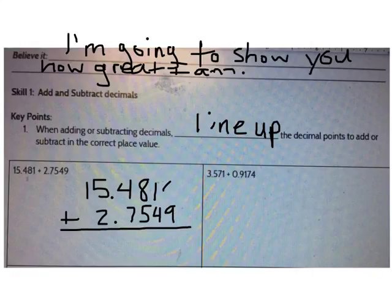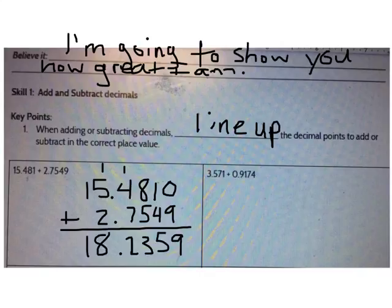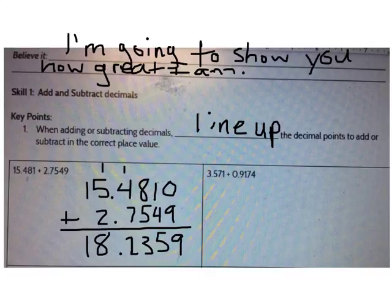I can place a zero behind the one to make sure that I have digits in every place. Now go ahead and add. What is the sum? The sum is 18 and 2359 ten-thousandths. 0 plus 9 is 9, 1 plus 4 is 5, 8 plus 5 is 13, 1 plus 4 plus 7 is 12, 1 plus 5 plus 2 is 8, and then I have a 1 in the tens place. Now you try one.